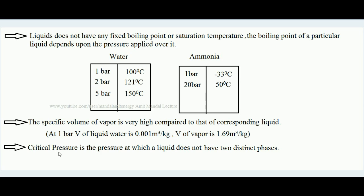To summarize the three prerequisites: first, liquids do not have a fixed boiling point — it depends on pressure. Second, the specific volume of vapor is very high compared to that of liquid. Third, beyond the critical pressure, two distinct phases — liquid and vapor — do not exist, so liquid cannot be converted to vapor above this pressure.